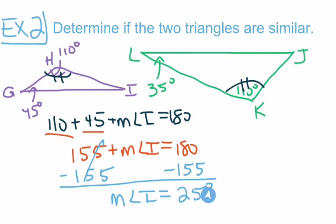Since the measure of angle I is 25 degrees, that does not match up with the measure of angle L. We also know it won't match up with the measure of angle J. So these two triangles are not similar. Although we do have one pair of congruent angles — angle H is congruent to angle K — because we do not have a second pair of congruent angles, we cannot say these triangles are similar.